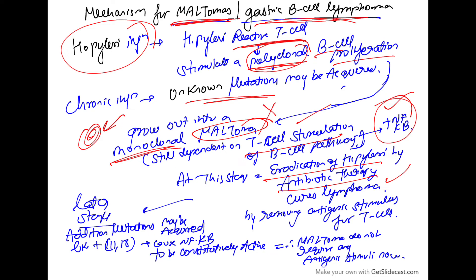But this can be treated only at this stage. But at later stage, with additional mutations being acquired, for example like translocation 11;18. Translocation 11;18, if it is acquired, it will cause the NF-kappa B to be constitutively active.